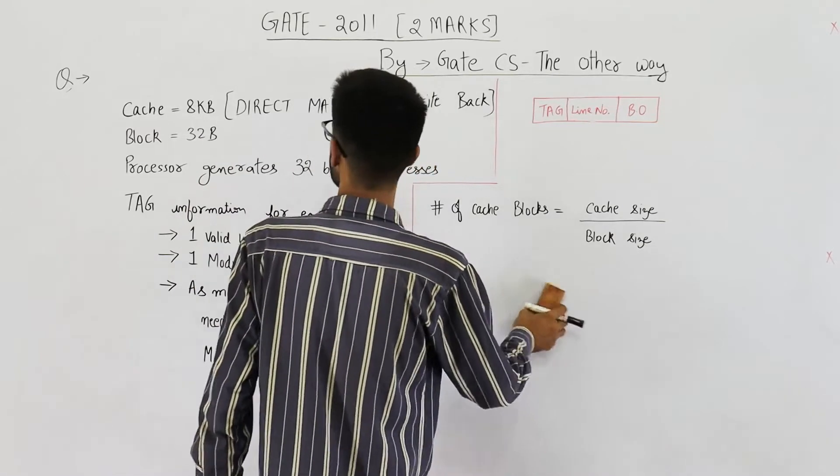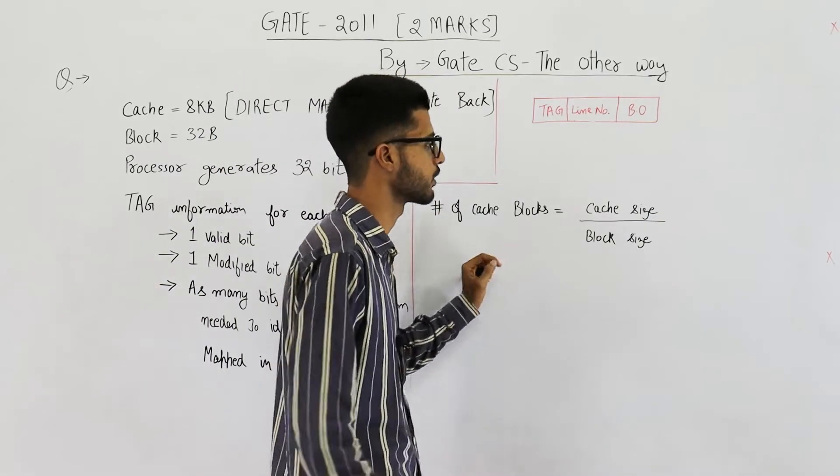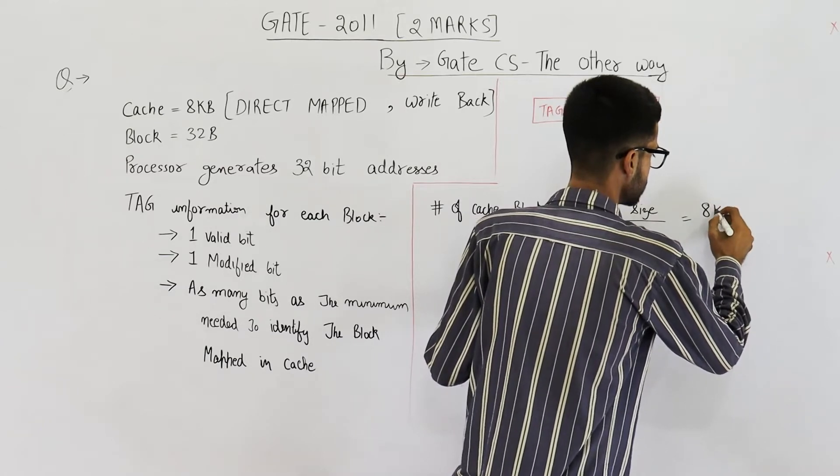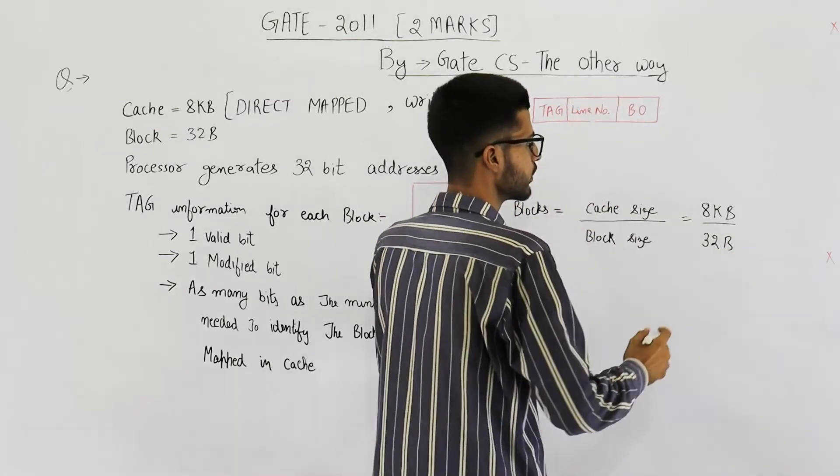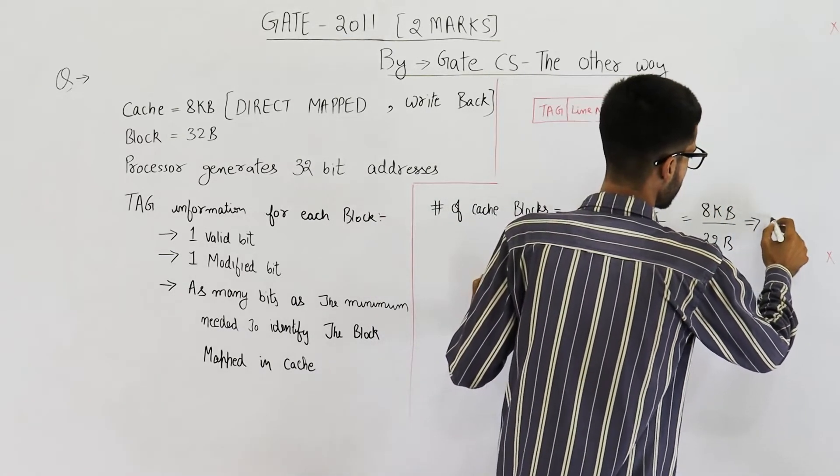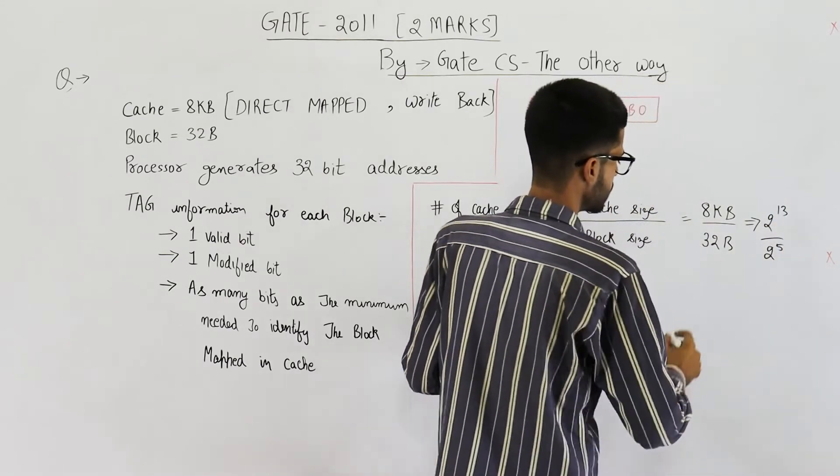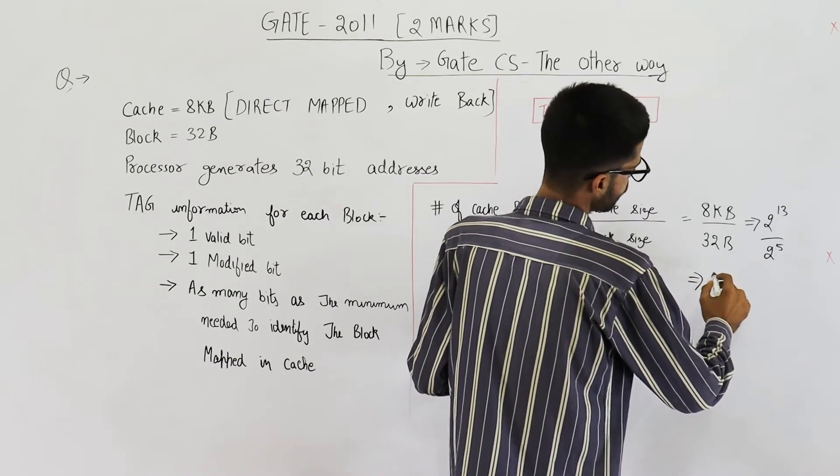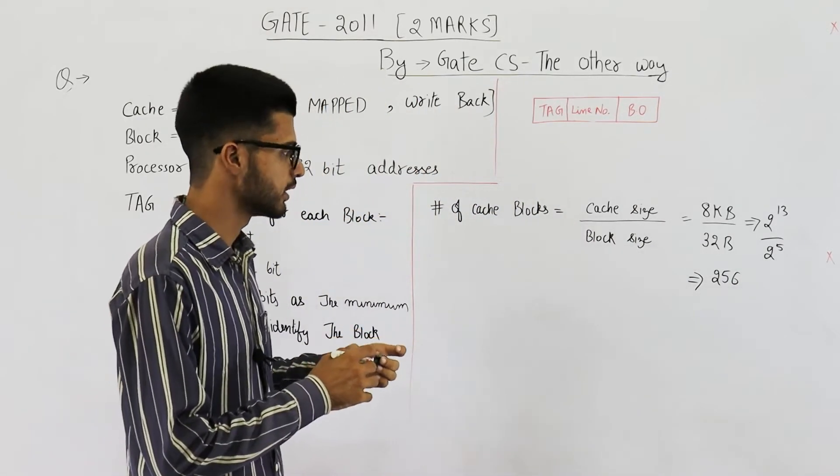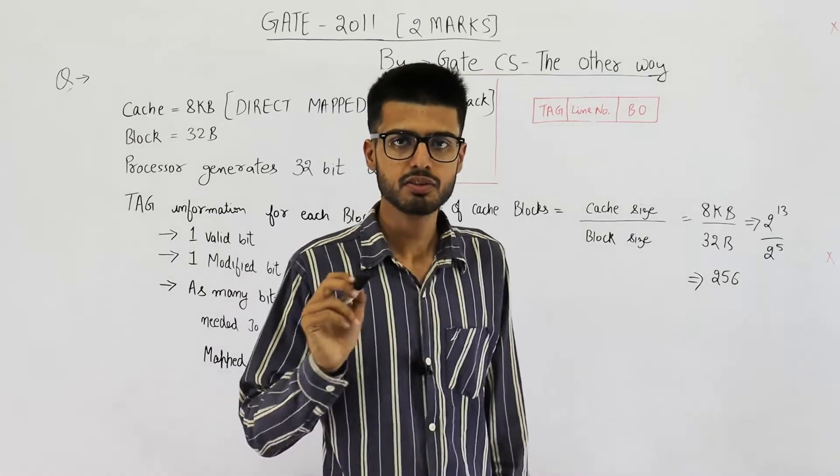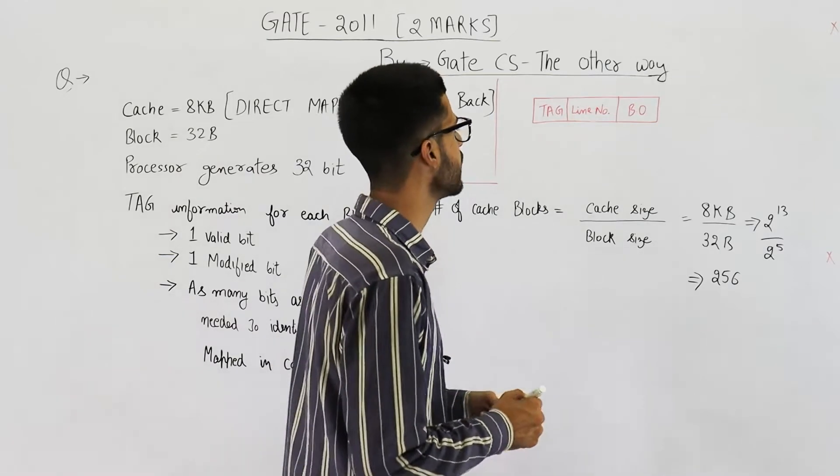So your cache is 8 KB and block size is 32 B. That means number of blocks in cache will be 8 KB divided by 32 B. So this will be 2 raised to the power 13 divided by 2 to the power 5. That will be 2 to the power 8 which is 256. Which means total number of lines or blocks in cache is 256. It also implies that this field line number will be of 8 bits.